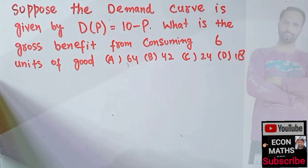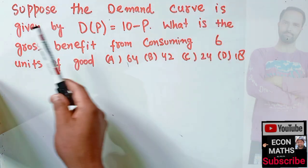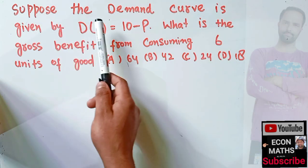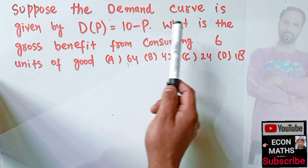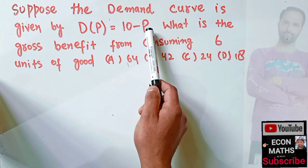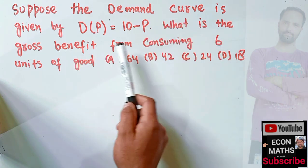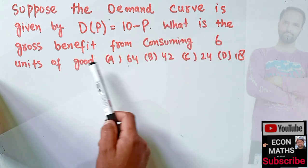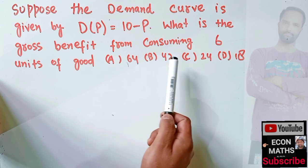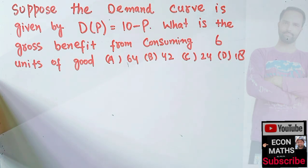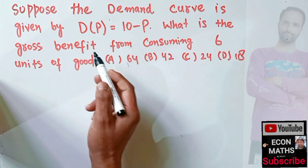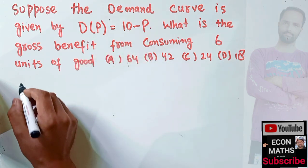In this video we will solve a question on how to find the gross benefit from consuming a good given the demand function. The question is: suppose the demand curve is given by D(P) = 10 minus P, where P is the price. What is the gross benefit from consuming six units of good? The options are 64, 42, 24, and 80.